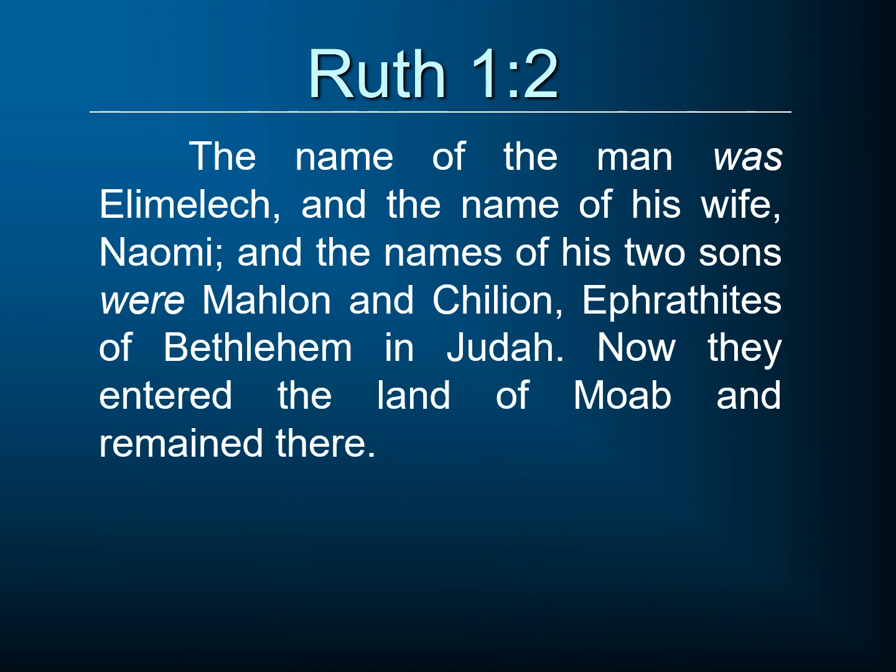Chapter 1, verse 2: the name of the man was Elimelech. El is short for Elohim — that's God — and Melech is king, and Eli means 'my God,' so the name means 'my God is king.' But he's not acting like God is king. Now, I don't know if he's being especially disobedient, but we're seeing him leave the promised land. The name of his wife was Naomi — that's going to be significant. And the names of his two sons were Mahlon and Kilion, and they were Ephrathites — that's somebody from the neighborhood of Bethlehem — Ephrathites of Bethlehem in Judah. Now they entered the land of Moab and remained there.